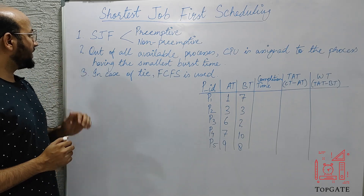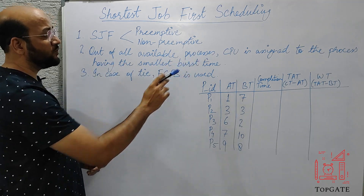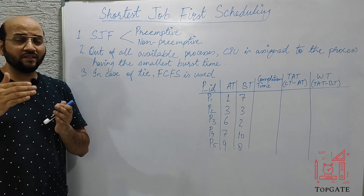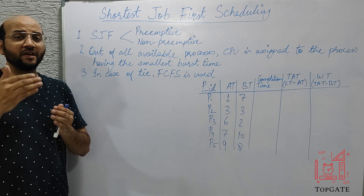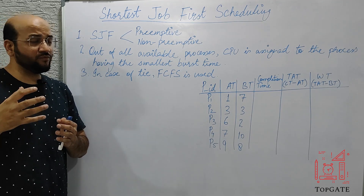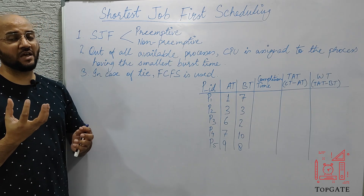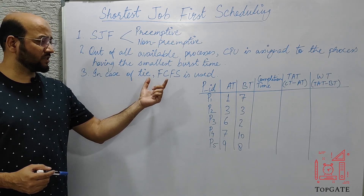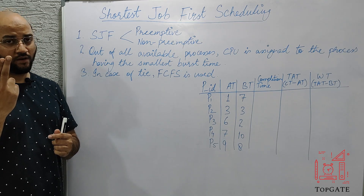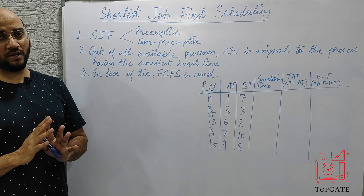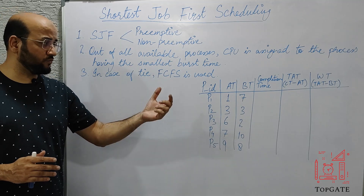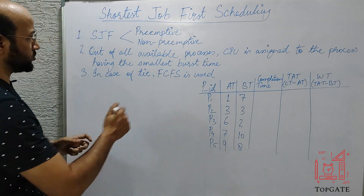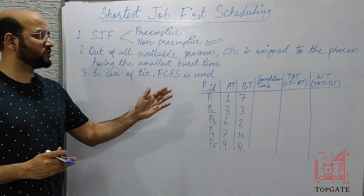Key points of SJF: First, it has two variants — preemptive and non-preemptive. Second, out of all available processes, the CPU is assigned to the process with the smallest burst time among those already in RAM and ready for execution. Third, in case of a tie where two processes have the same burst time, we break the tie using FCFS — whichever process arrived first is scheduled first.